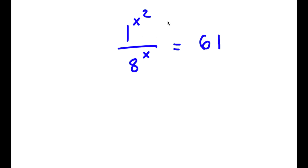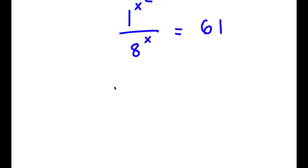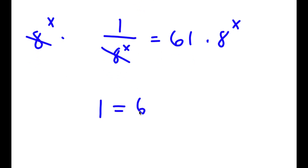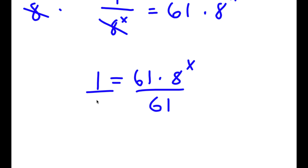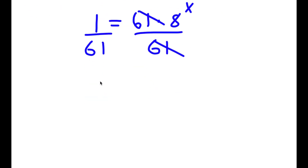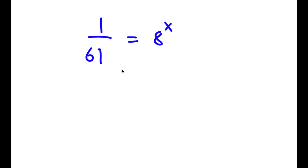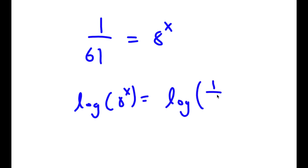In this problem, I have 1 to the power of x squared over 8 to the power of x is equal to 61. To solve this, first off, 1 to the power of any number is going to equal 1. Meaning 1 to the power of x squared is simply equal to 1. So now I have 1 over 8 to the power of x is equal to 61. Now I'm going to multiply both sides by 8 to the power of x, so these cancel out, and I have 1 is equal to 61 times 8 to the power of x. Now I'm going to divide both sides by 61, so I have 1 over 61 is equal to 8 to the power of x. So to solve this, I'm going to take the log on both sides, giving log 8 to the power of x is equal to log of 1 over 61.